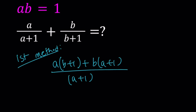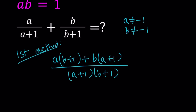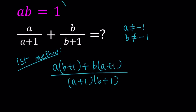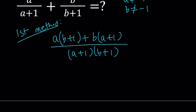One thing to keep in mind: if we want this expression to be defined, a should not equal negative 1 and b should not equal negative 1. Those are the conditions we need. You could get ab equals 1 from negative 1 times negative 1, but in our case that's not possible. Always keep in mind that ab equals 1 — that's going to be helpful along the way.